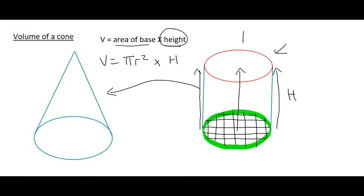Mathematicians have come up with a rule that we can use whenever we have a pyramid kind of shape. A pyramid kind of shape is anything where it starts off wide at the bottom and then ends up narrow, or at a specific point at the top. And you might remember this from when we did the cube and the pyramid — we said that all you have to do at the end is divide your answer by 3.